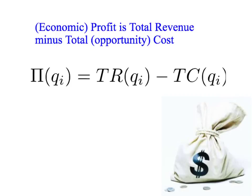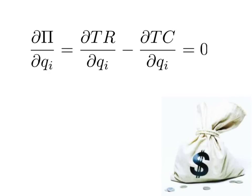So what level of output maximizes our economic profit? Mathematically, to solve for that, we simply need to find the derivative of our profit function and work out where the derivative is equal to zero. That's going to be the maximum level of profits — the top of the profit hill. And as profit is total revenue minus total cost, the change in profit with a change in quantity is simply the change in total revenue with a change in quantity minus the change in total cost with a change in quantity.